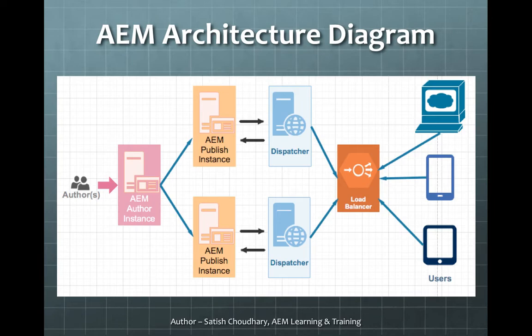It's always a one-way data flow from author to publish for security reasons. But there are cases where it could be reverse also — a two-way connection. For example, if we have comments or notes published on the published instance, then we need to get the data back to the author instance. It may have moderations or other pieces. That's why we have a publish-to-author data flow, but those are rare cases. In general, it's always unidirectional from AEM author to AEM publish.